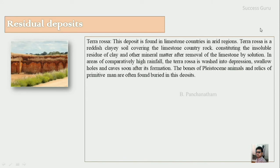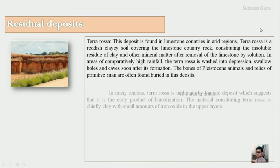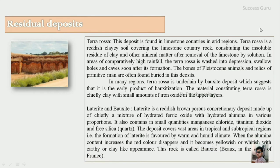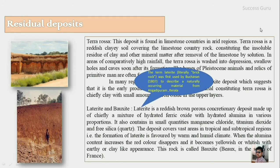Bones of Pleistocene animals as well as relics of primitive man are often found buried in these deposits in many regions. Terra rosa is underlain by bauxite deposits in many areas, which suggests that it is the earlier product of bauxitization. The material constituting terra rosa is chiefly clay with a small amount of iron oxide in the upper layer.